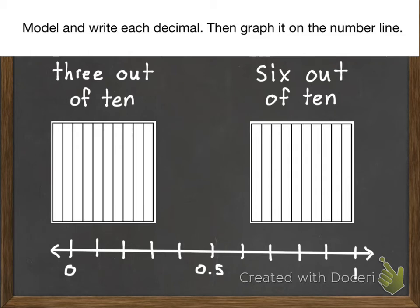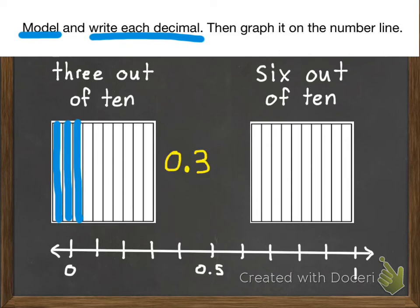So let's start with three out of ten. First step is to model. So let's fill in three out of my ten. One, two, three. Next, I need to write each decimal. So three out of ten would equal three tenths. Last part of our instructions, then graph it on the number line. So I'm going to go over three tenths. And we graph it.